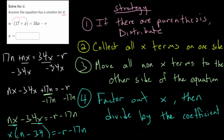And you check to make sure it worked by doing the distribution process. So we do x times n which is nx and x times negative 34 which is minus 34x. So our factoring worked, we checked it, and then now we just have x times by this number.